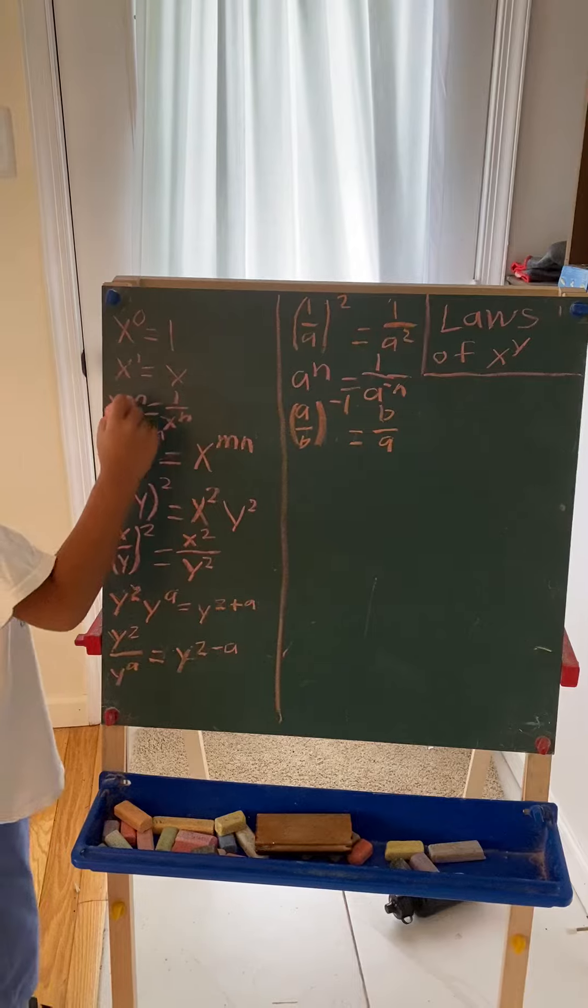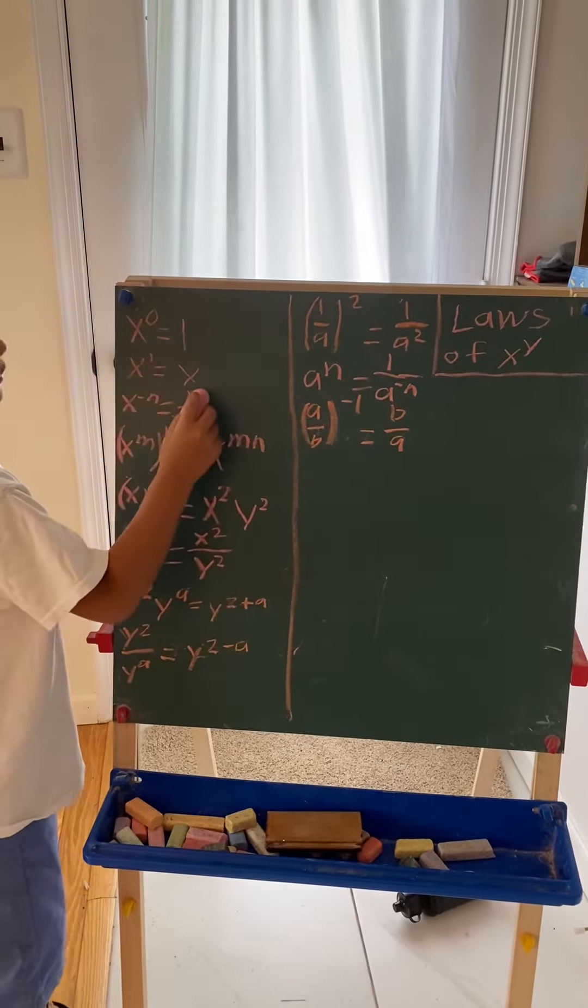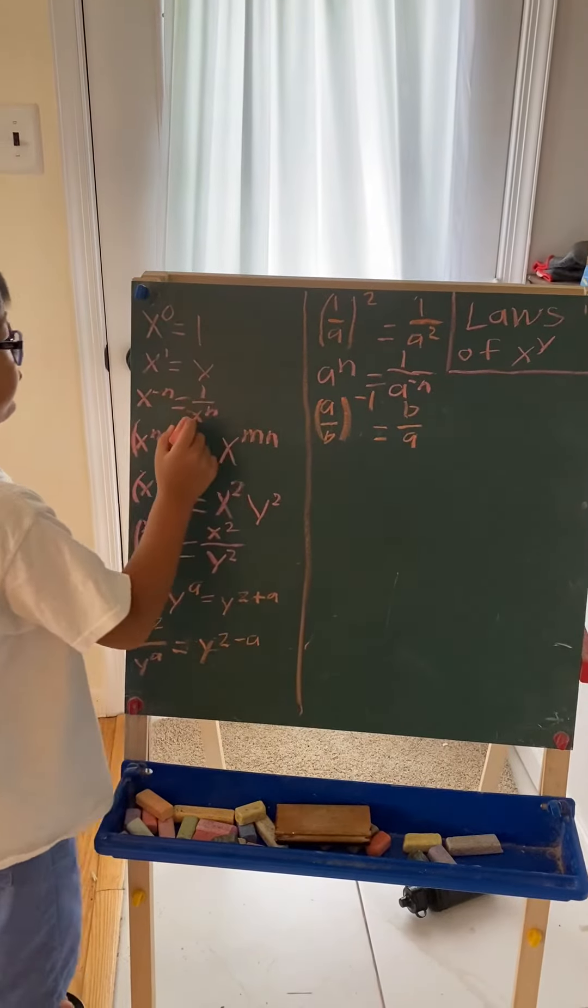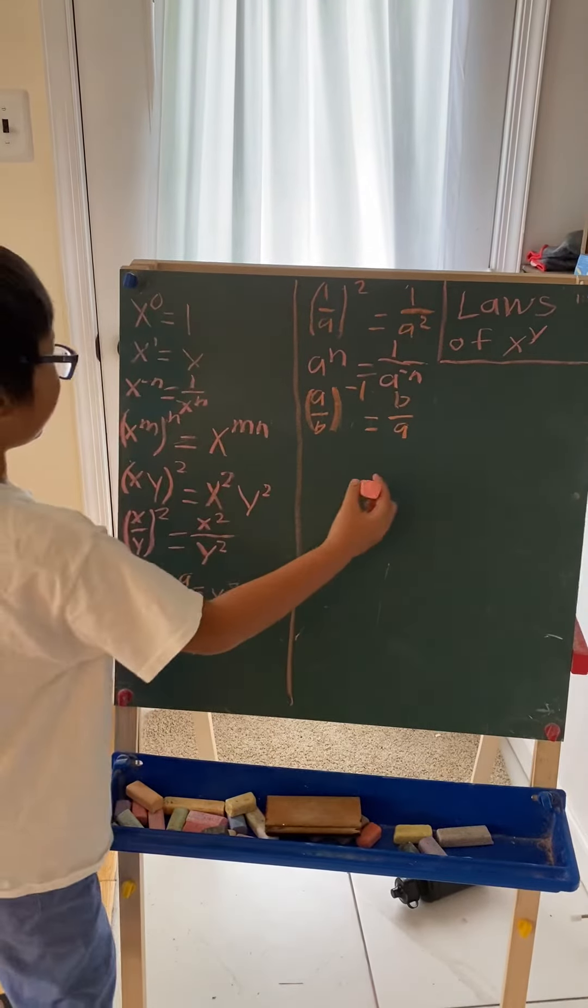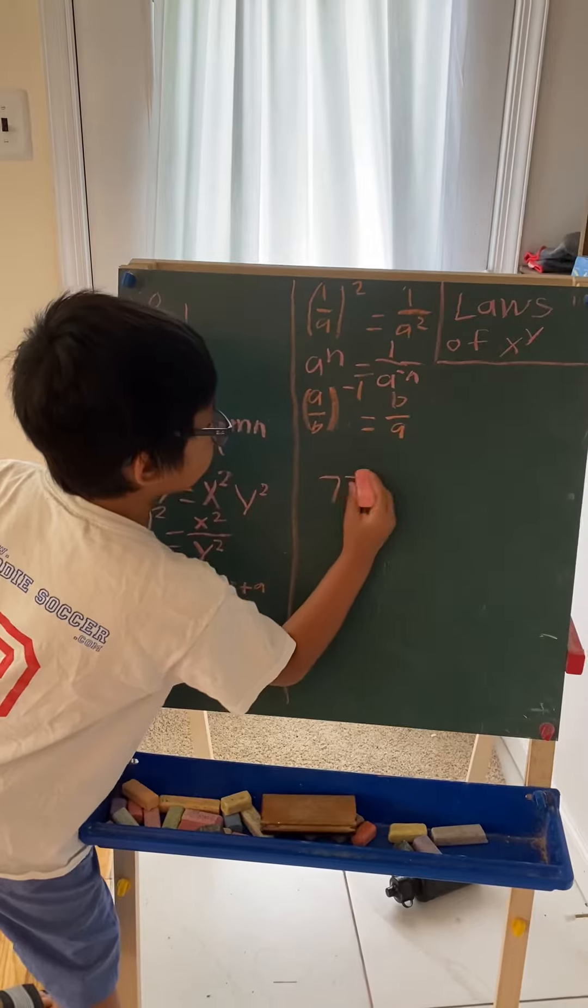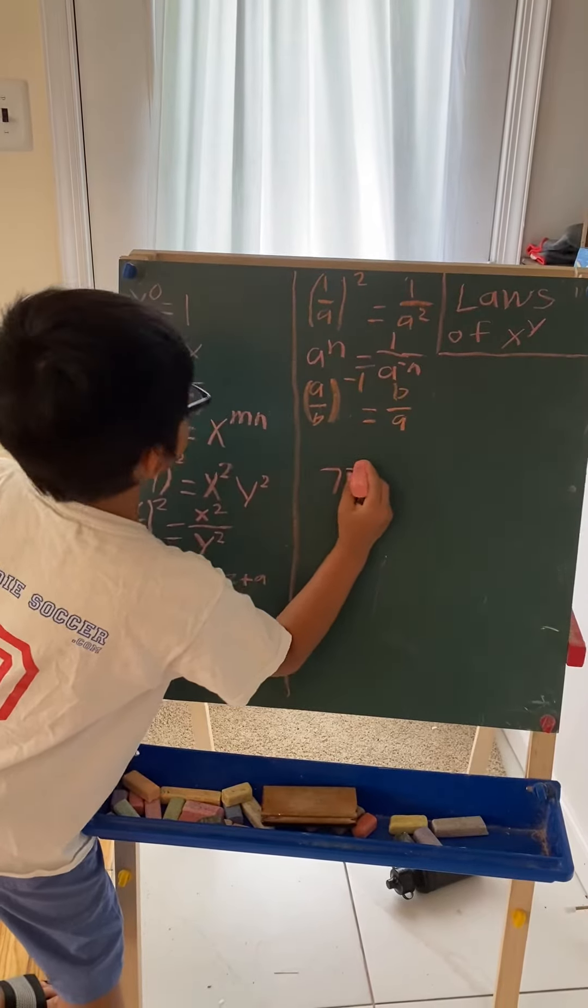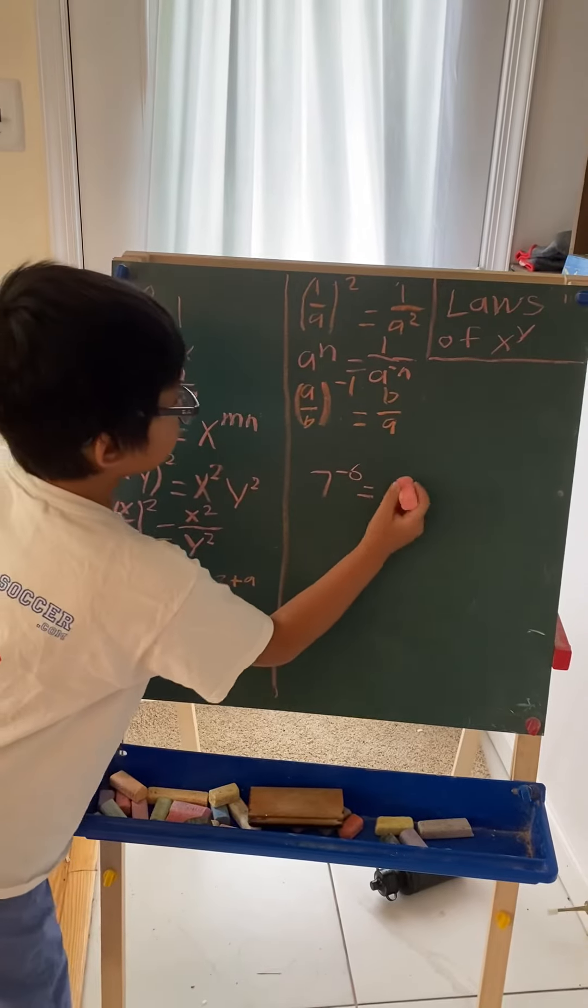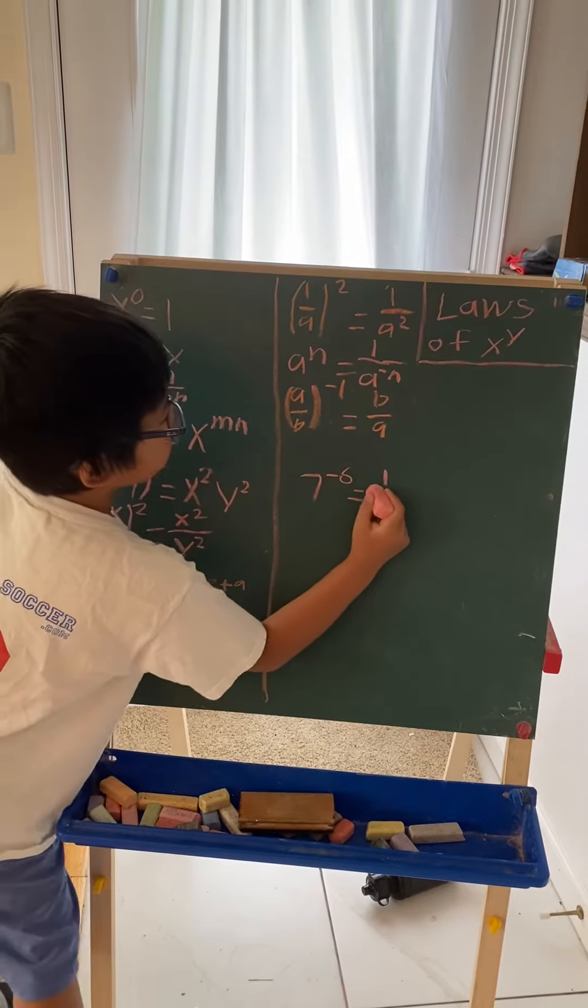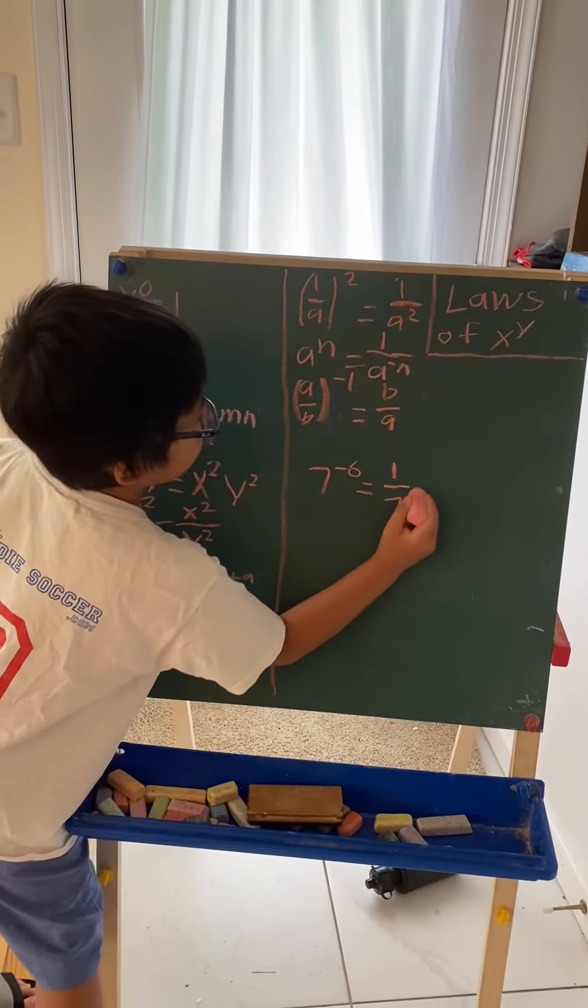And now, x to the negative n equals 1 over x to the n. So, for that one, 7 to the negative 6 would equal 1 over 7 to the sixth.